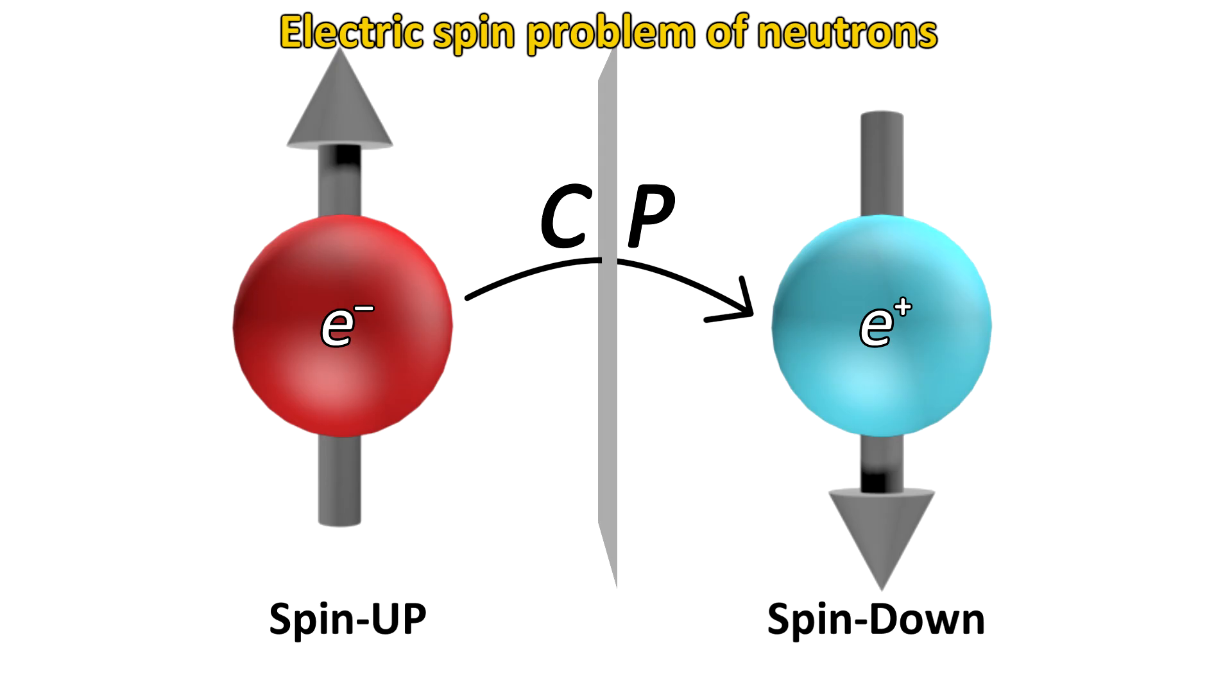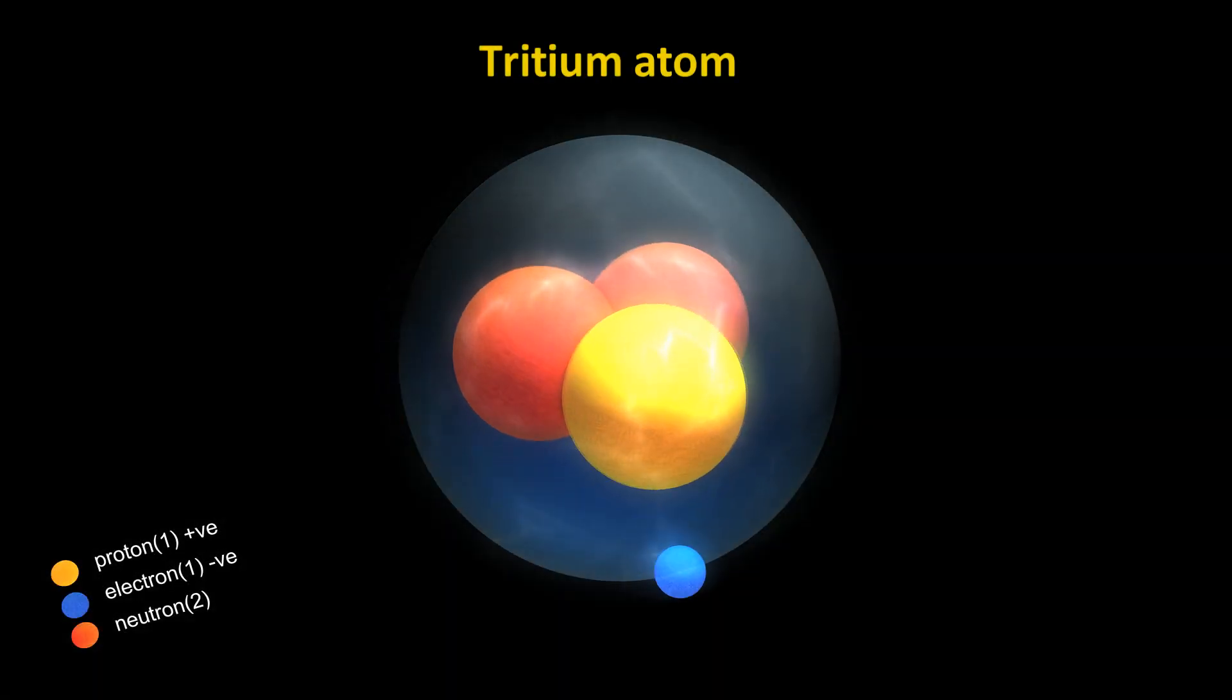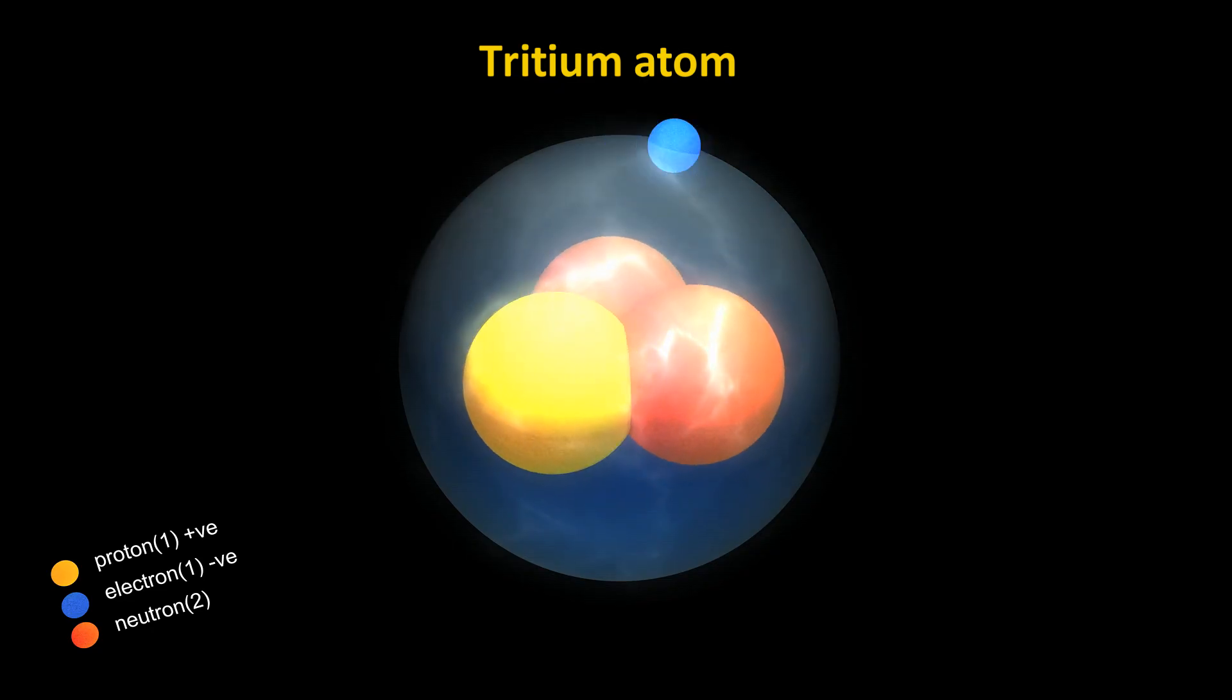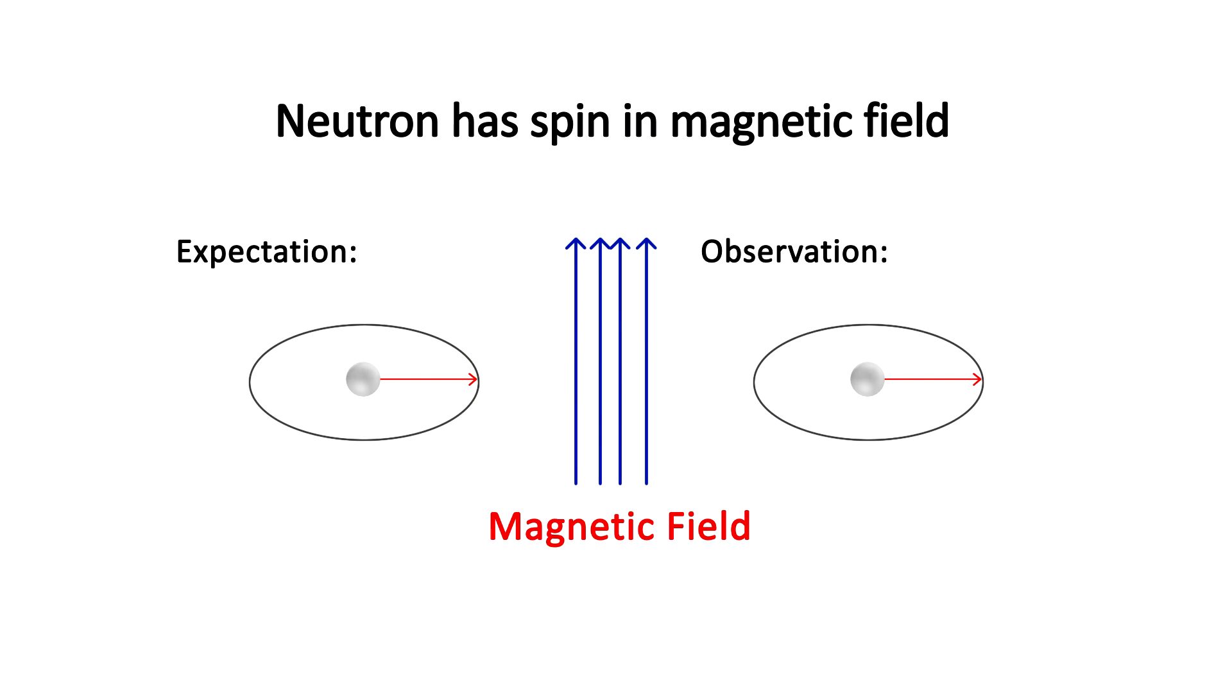It so happens that the theorized existence of a particle called the axion solves this problem. Essentially, the problem can be more simply shown in the following way. As you know, protons and neutrons make up the nucleus of atoms. The neutron has a property called a magnetic moment, or spin. This means that if you put the neutron in a magnetic field, the neutron will have a spin. The reason for this spin, even though the neutron has no charge, is because the neutron is made of three quarks that have spin, and all of these combine to give the neutron a spin. And this is confirmed by observation.